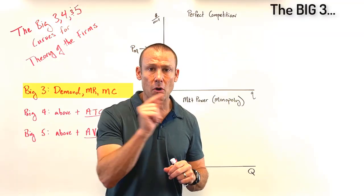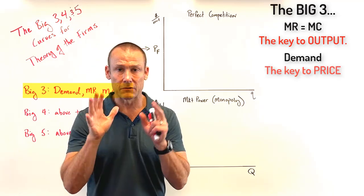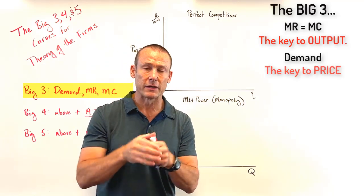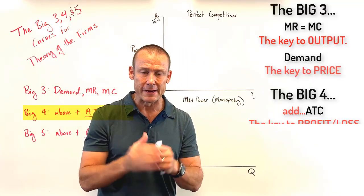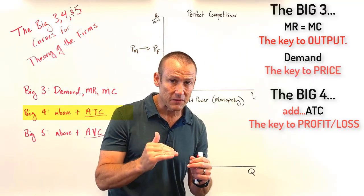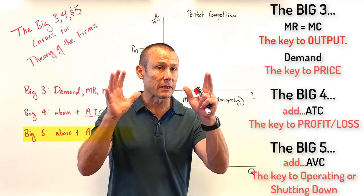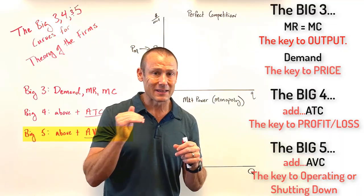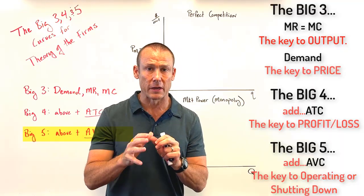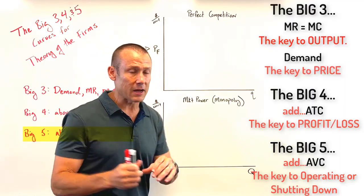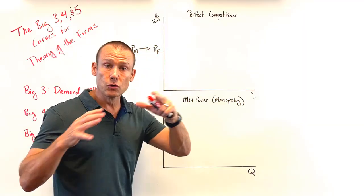Quick review: big three — Demand, MR, MC. MR = MC is key to output; demand is key to price. Then if asked about profit and loss, add the ATC curve. Finally, the big five adds AVC, which you only need if the firm is making losses and you need to determine whether it should operate or shut down. Now let's get to the graphs.